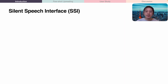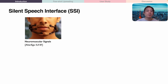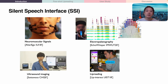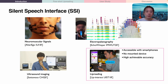Silent speech interfaces have emerged as a promising alternative to tackle the challenges in voice-user interfaces. Researchers propose various approaches to exploit non-acoustic signals, such as neuromuscular signals, electrophysiography, ultrasound imaging, and RGB cameras. Among these, we are particularly interested in the RGB camera approach because it can be easily implemented on smartphones without requiring any obtrusive head-mounted devices, and its rich visual information has great potential for achieving high accuracy.